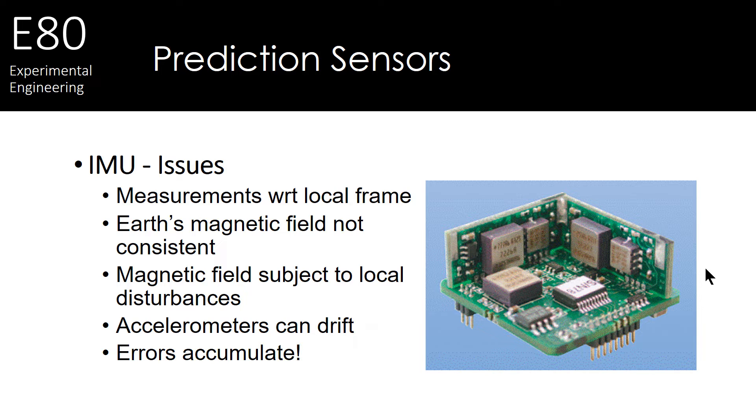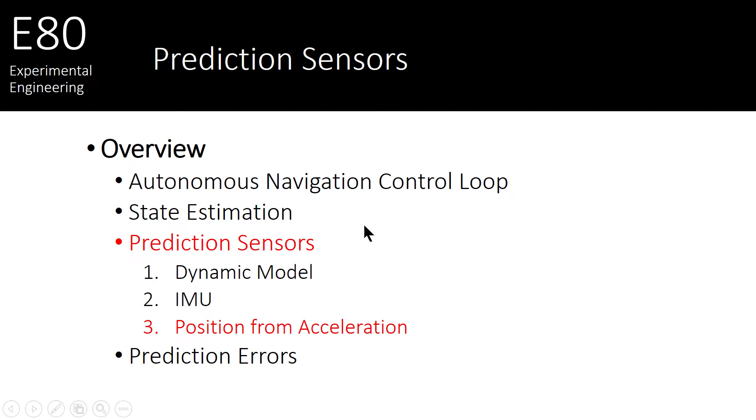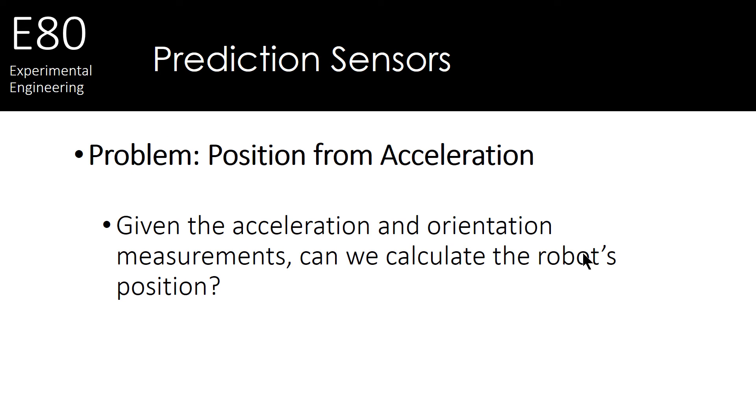So both the dynamic model and the IMU gave you some accelerations and orientations. But they didn't exactly give you positions yet. So let's talk now about how you might get position from these types of acceleration orientation measurements. So here's our problem. We're given acceleration and orientation measurements, but we need to calculate the robot's position. How do we do that?